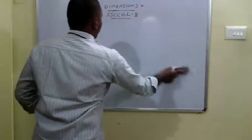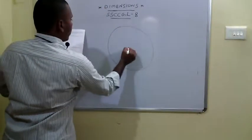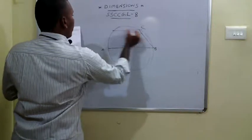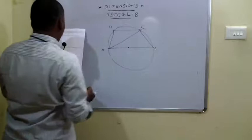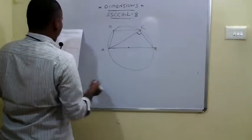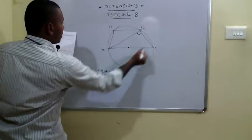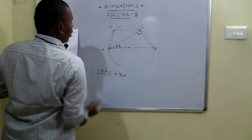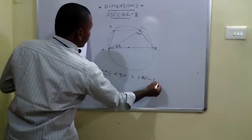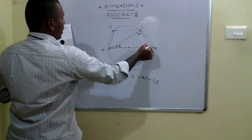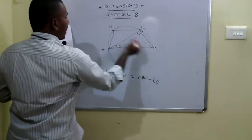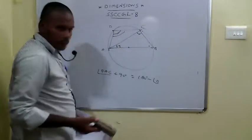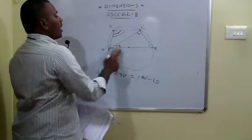The 70th problem is from circles. AB is a diameter, and C and D are points on the circle. Since AB is a diameter, angle ACB equals 90 degrees. They ask for angle BAC. In triangle ACB, angle BAC plus 90 degrees equals 180 degrees minus angle B. Since ABCD is a cyclic quadrilateral, the sum of opposite angles is 180 degrees, so 180 minus angle B equals angle ADC. Therefore, the answer is angle ADC.